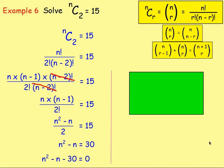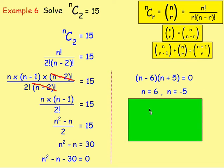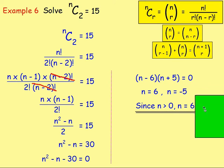Subtracting 30 from both sides gives n squared minus n minus 30 equals 0. Factorising: (n minus 6)(n plus 5) equals 0, giving n equals 6 or n equals negative 5. However, n is the number of objects you have — you cannot have negative objects — so n must be bigger than zero, meaning n equals 6.